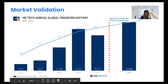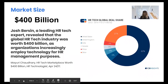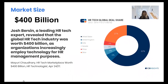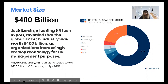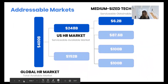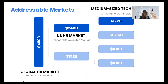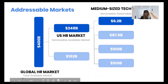The market validation is clear: spend on HR tech is growing, and the market size is 400 billion dollars globally, with the United States taking the lion's share at 62%. The total addressable market is a 400 billion dollar global HR market. The U.S. market is 248 billion dollars — that's the serviceable available market. Very conservatively, we took 2.5% of the U.S. market at 6.2 billion dollars as our serviceable obtainable market. Our focus is on medium-sized tech companies, because tech companies tend to be early adopters of new technology.